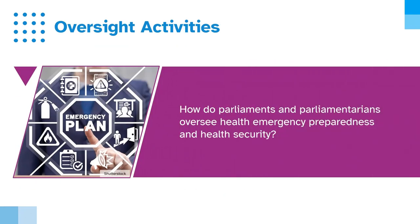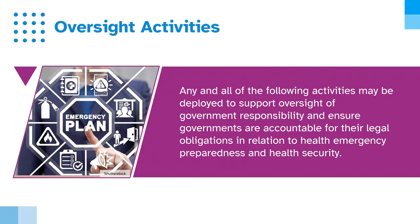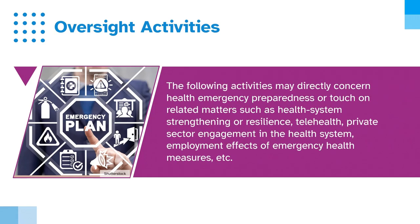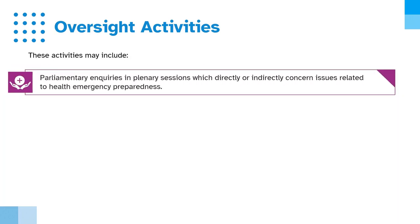How do parliaments and parliamentarians oversee health emergency preparedness and health security? Any and all of the following activities may be developed to support oversight of government responsibility and ensure governments are accountable for their legal obligations. These activities may directly concern health emergency preparedness or touch on related matters such as health system strengthening or resilience, telehealth, private sector engagement in the health system, employment effects of emergency health measures, etc.